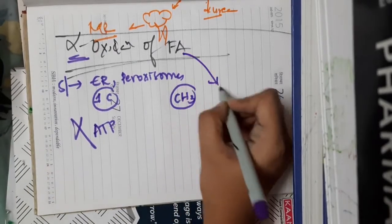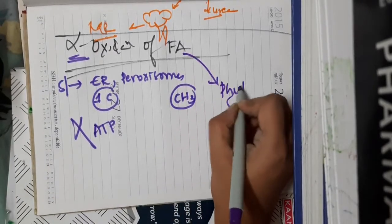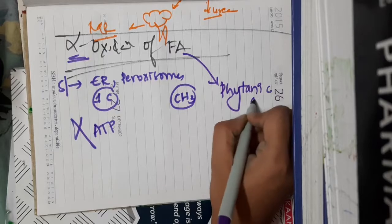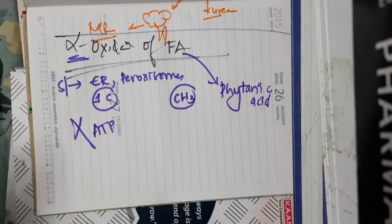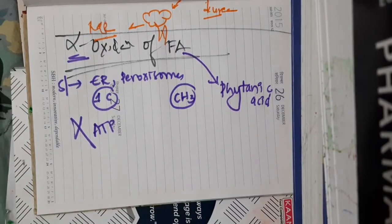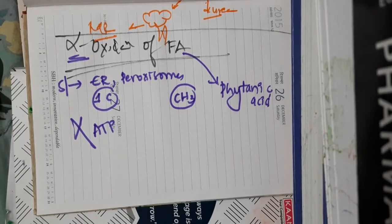This alpha oxidation is used for oxidation of phytanic acid, which is a major dietary methylated fatty acid in dairy products.